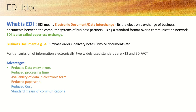What is EDI? EDI means Electronic Data Interchange. It's the electronic exchange of business documents between the computer systems of business partners. Business partners means companies who are doing business with each other. In EDI, data is transferred using a standard format over a communication network.